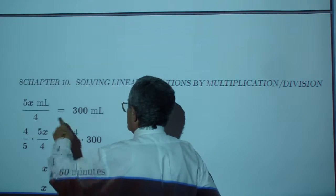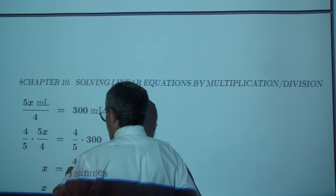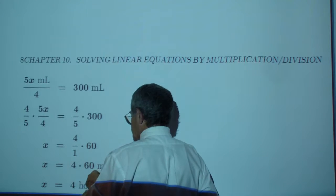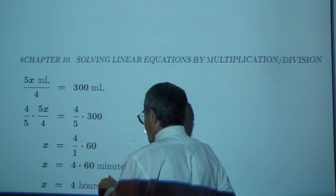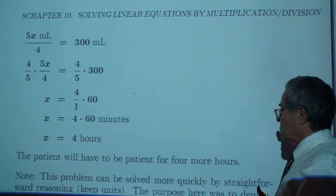5x over 4 milliliters is the 300 milliliters multiplied by 4 over 5, you get x, which is 4 times 60, or 4 hours. The patient will have to be patient for 4 more hours.